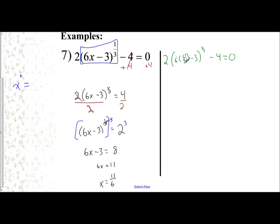Well, 6 times 11 sixths, the 6th and the 6th will cancel. And so I'm left with twice the quantity 11 minus 3 to the one-third power, minus 4 should equal 0.